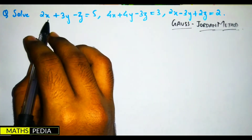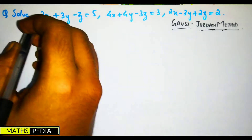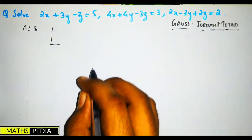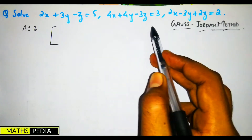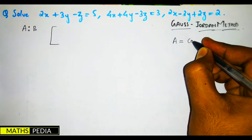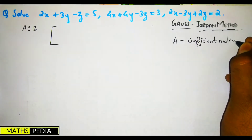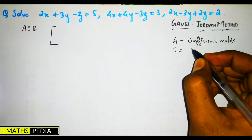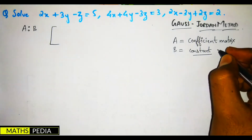First of all, we have to solve a system of linear equations by the Gauss-Jordan method. Same as before, you first write the augmented matrix. A is the coefficient matrix, and B is the constant column matrix.